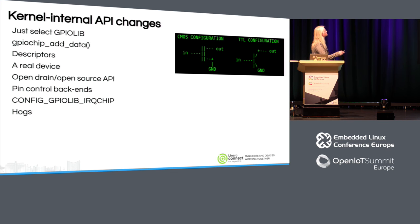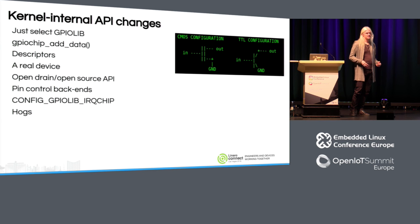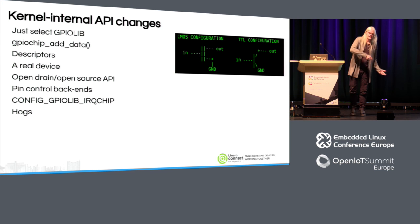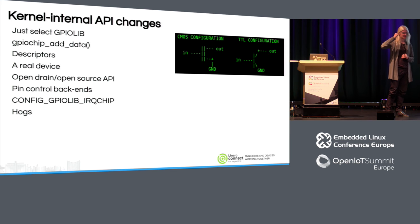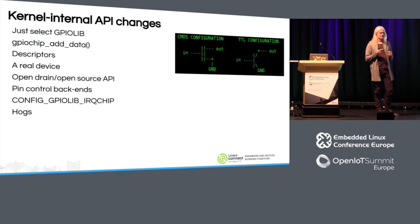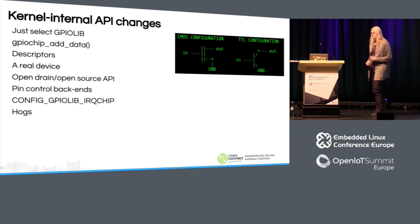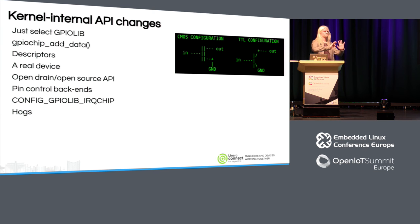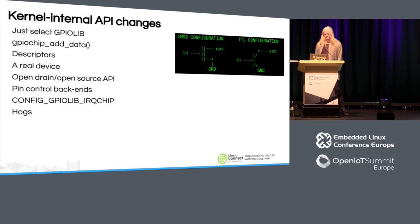GPIO chip add data: the GPIO lib stores a pointer to your driver data internally. To help you out, we have another pointer. Some people think the container_of construction is better — that's what we used before, where the state container for the driver would have a GPIO chip embedded inside it, and you'd use container_of to get the pointer to the state container. That is arguably more type-safe. But this approach is easier from a user perspective. It's a matter of taste — if you can make a good argument for container_of and type safety, fine; if you find container_of obscure, use this.